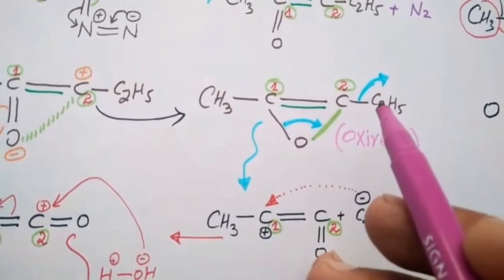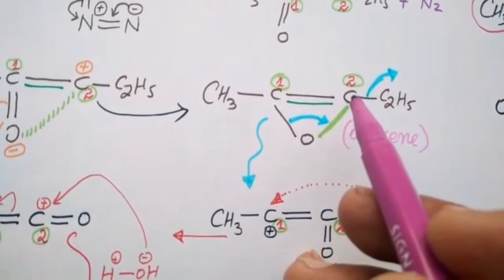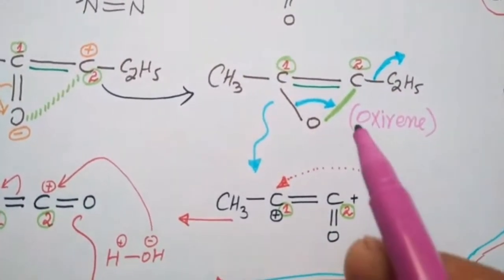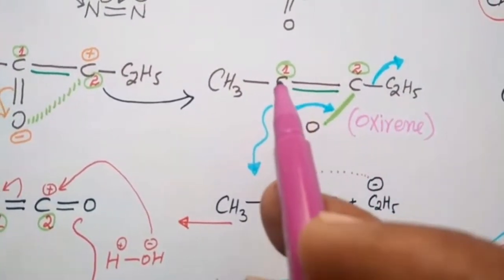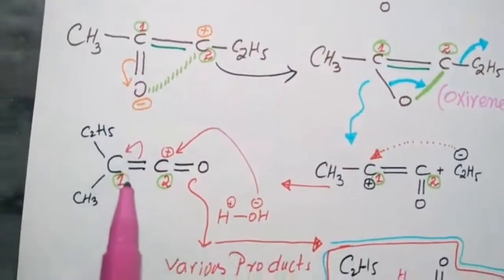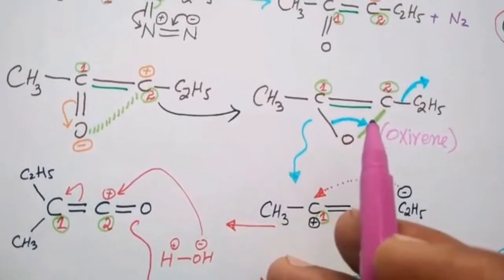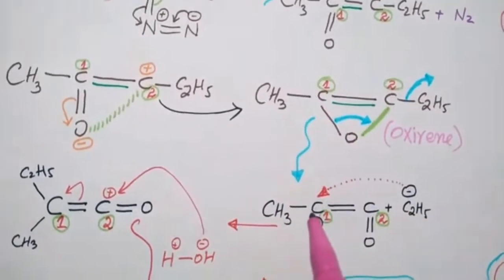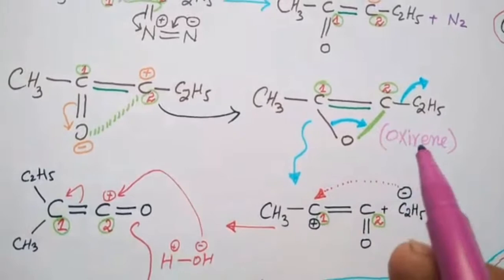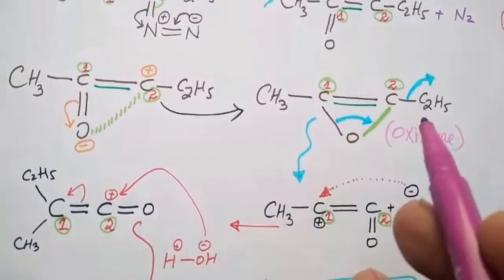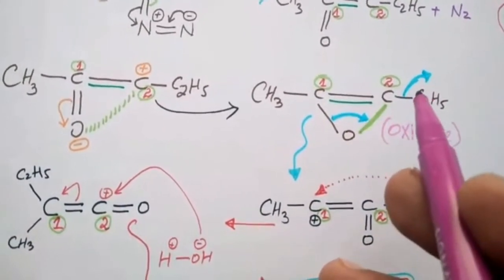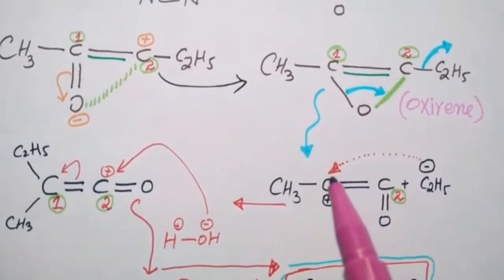This alkyl group will come out from here as a nucleophile. Now there's a positive center here on the carbon. When this bond shifts, a positive charge forms. Here there's positive charge, here there's double bond. This system will release, so this negative will bind with this positive forming this ketene.